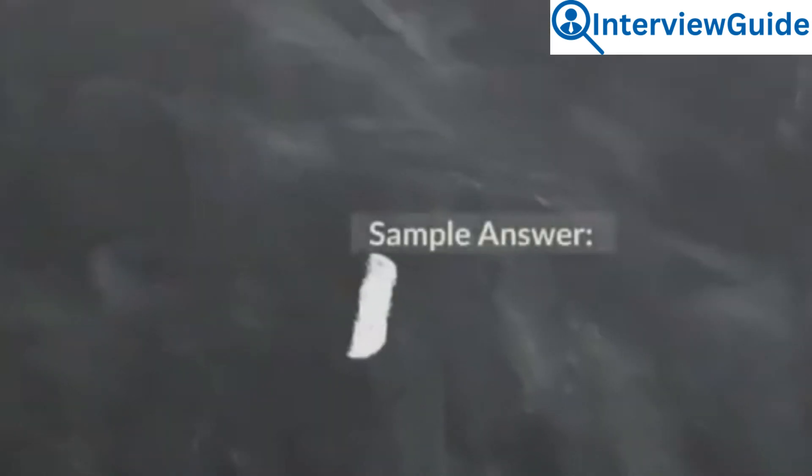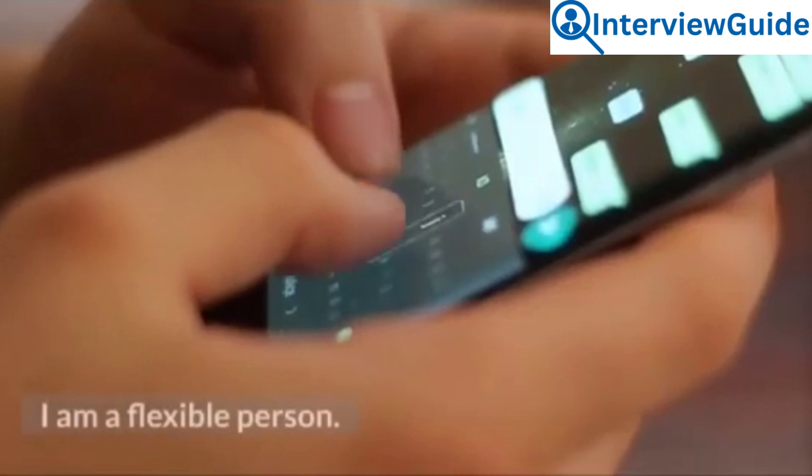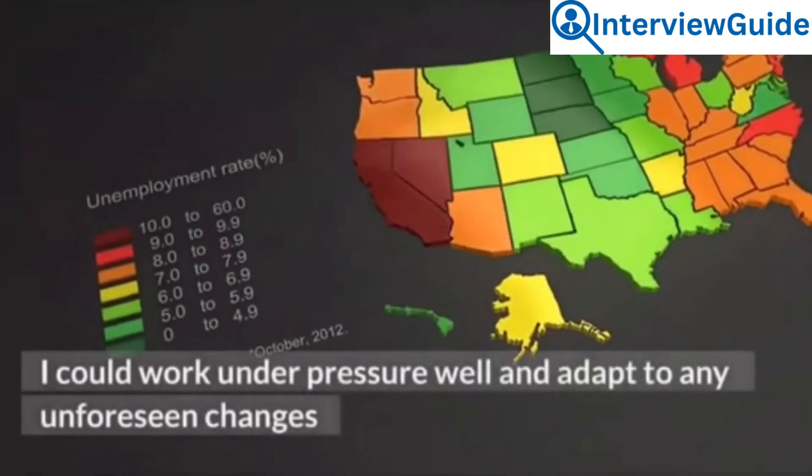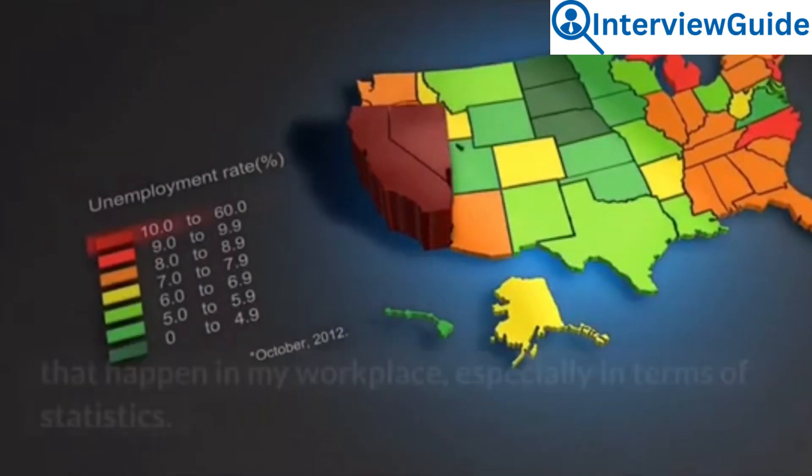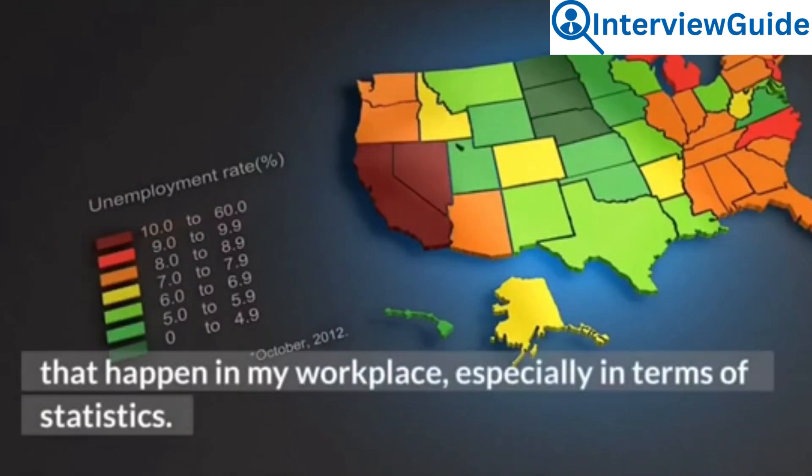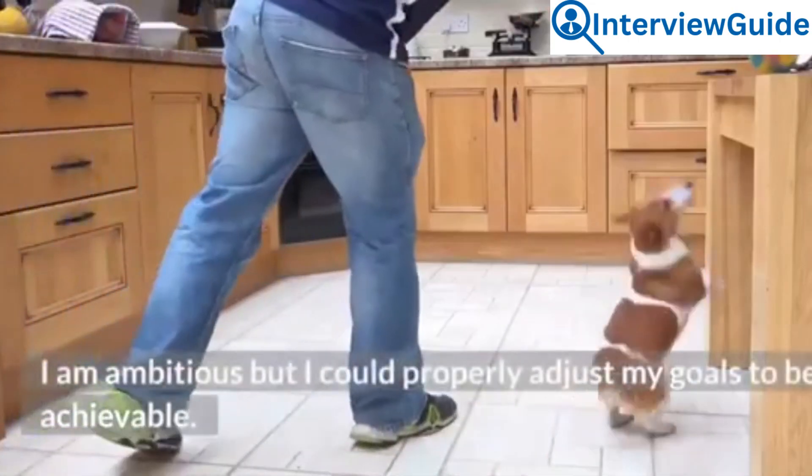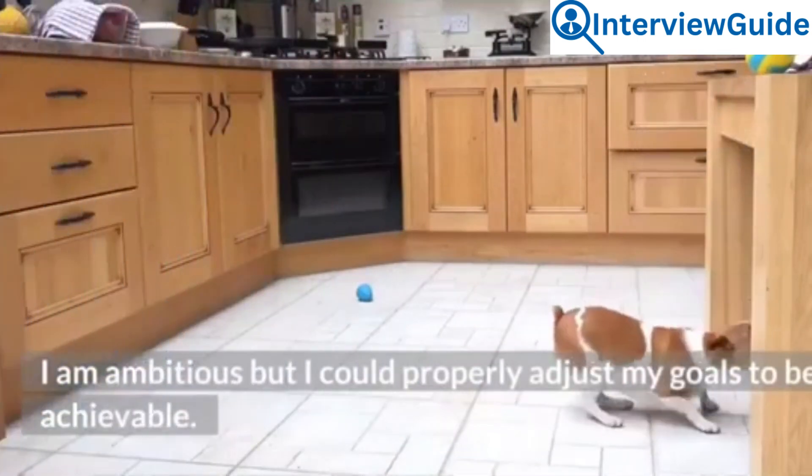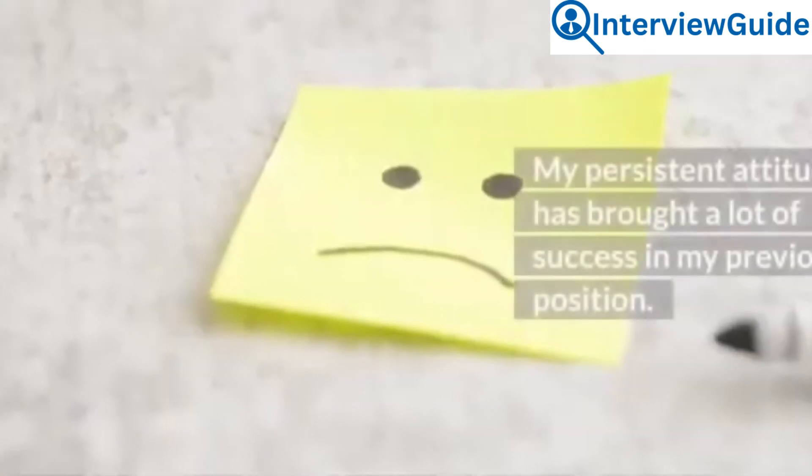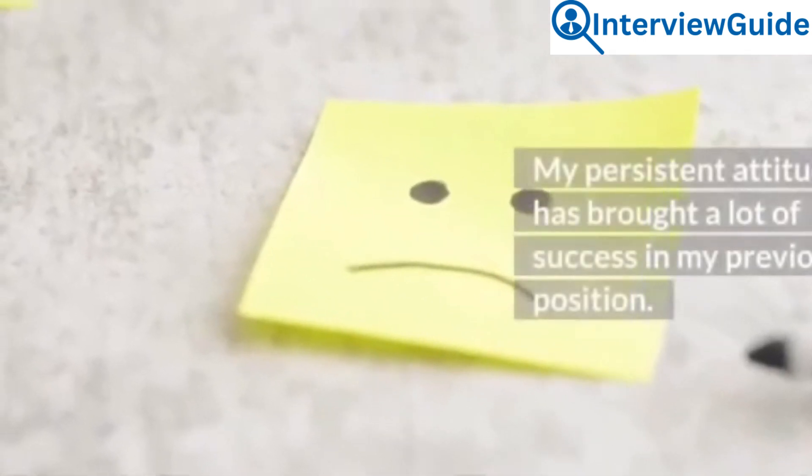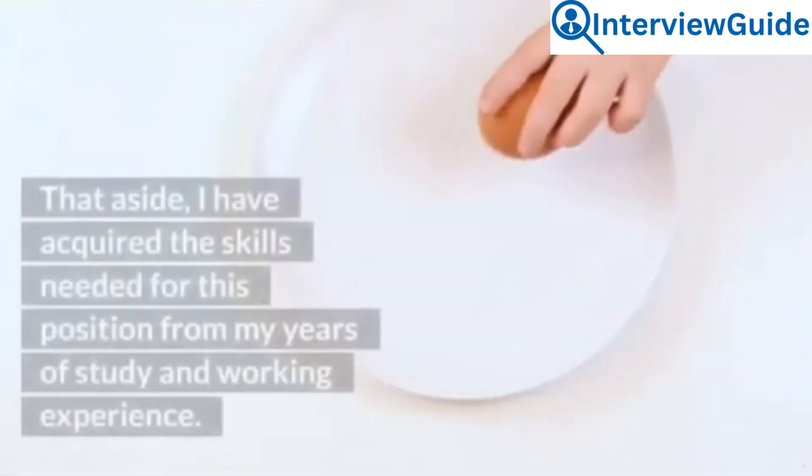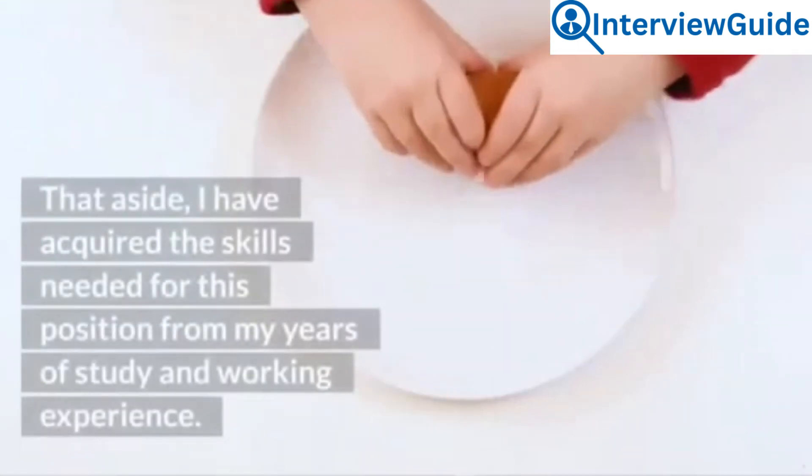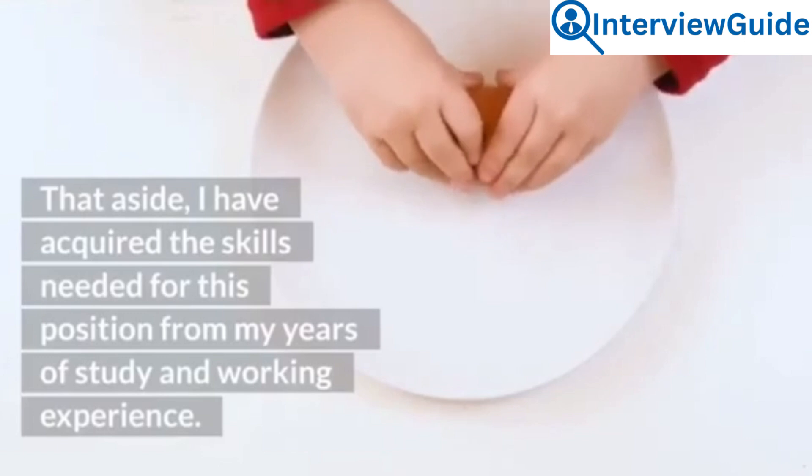Sample Answer: I am a flexible person. I could work under pressure well and adapt to any unforeseen changes that happen in my workplace, especially in terms of statistics. I am ambitious but I could properly adjust my goals to be achievable. My persistent attitude has brought a lot of success in my previous position. That aside, I have acquired the skills needed for this position from my years of study and working experience.